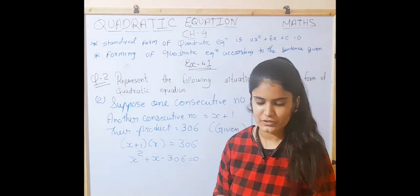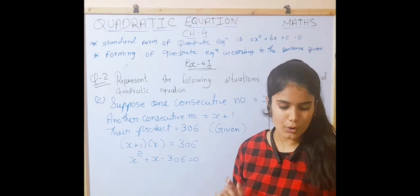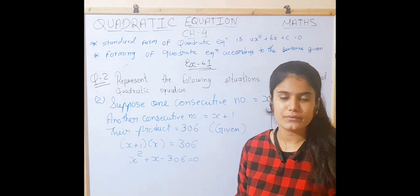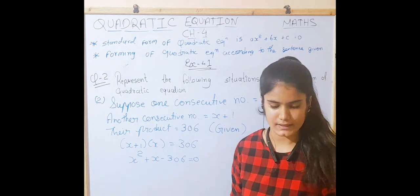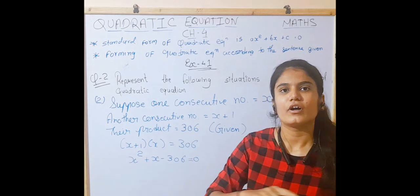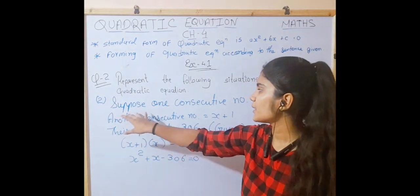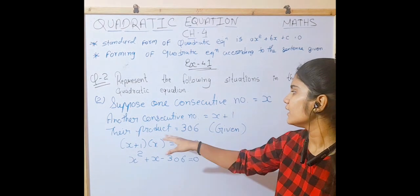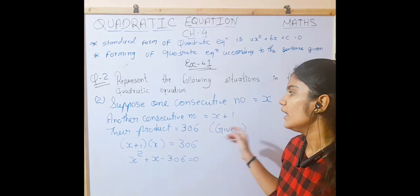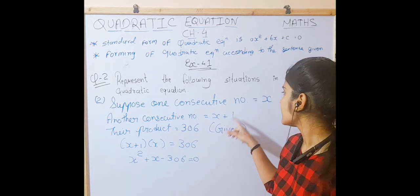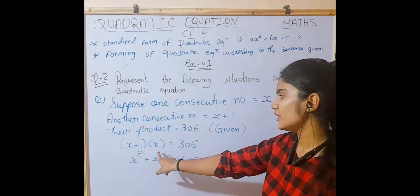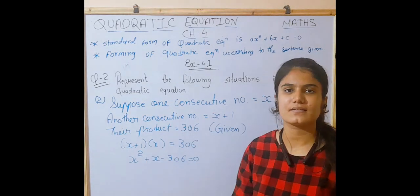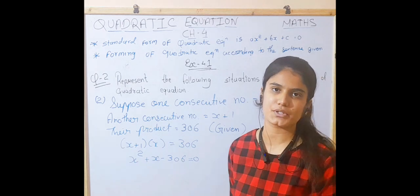Situation 2: The product of 2 consecutive positive integers is 306. Suppose the first integer is X and the next is X + 1. Their product: X(X + 1) = 306, giving X² + X - 306 = 0, which is a quadratic equation.